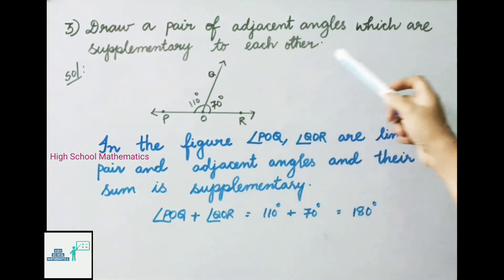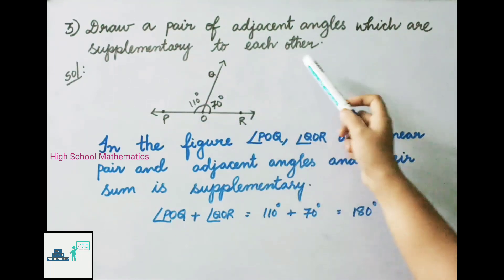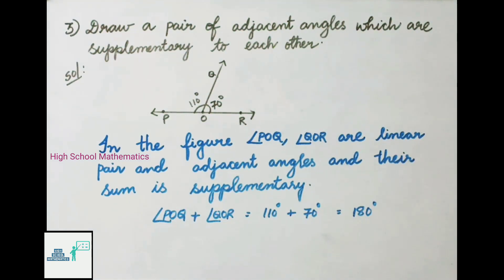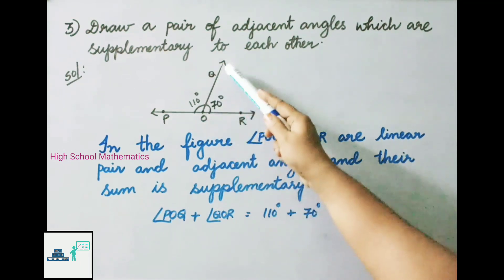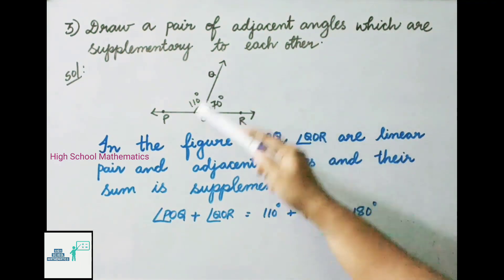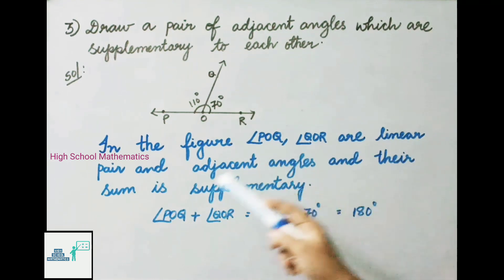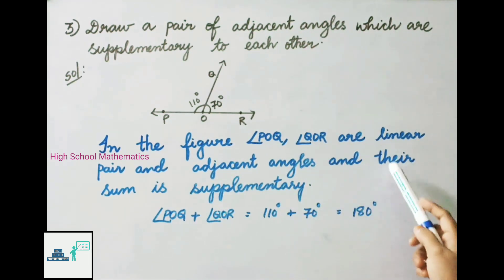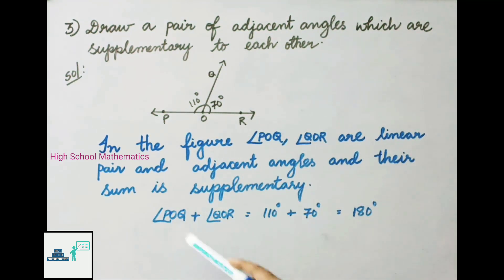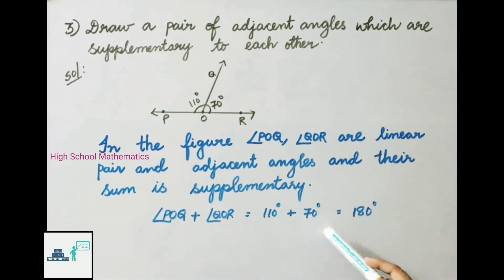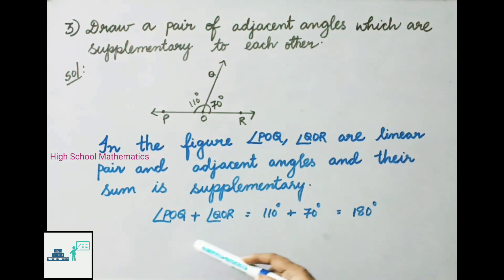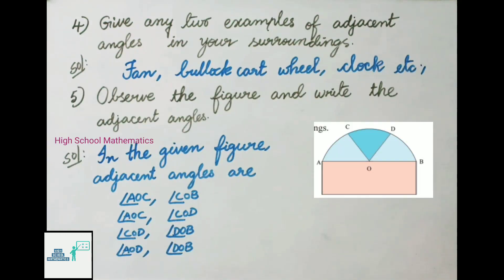Question number three: draw a pair of adjacent angles which are supplementary to each other. In the given figure, angle POQ and angle QOR are a linear pair and adjacent angles, and their sum is supplementary. That is, angle POQ plus angle QOR equals 110 plus 70 degrees, which equals 180 degrees. Therefore angle POQ and angle QOR are a pair of adjacent angles which are supplementary to each other.